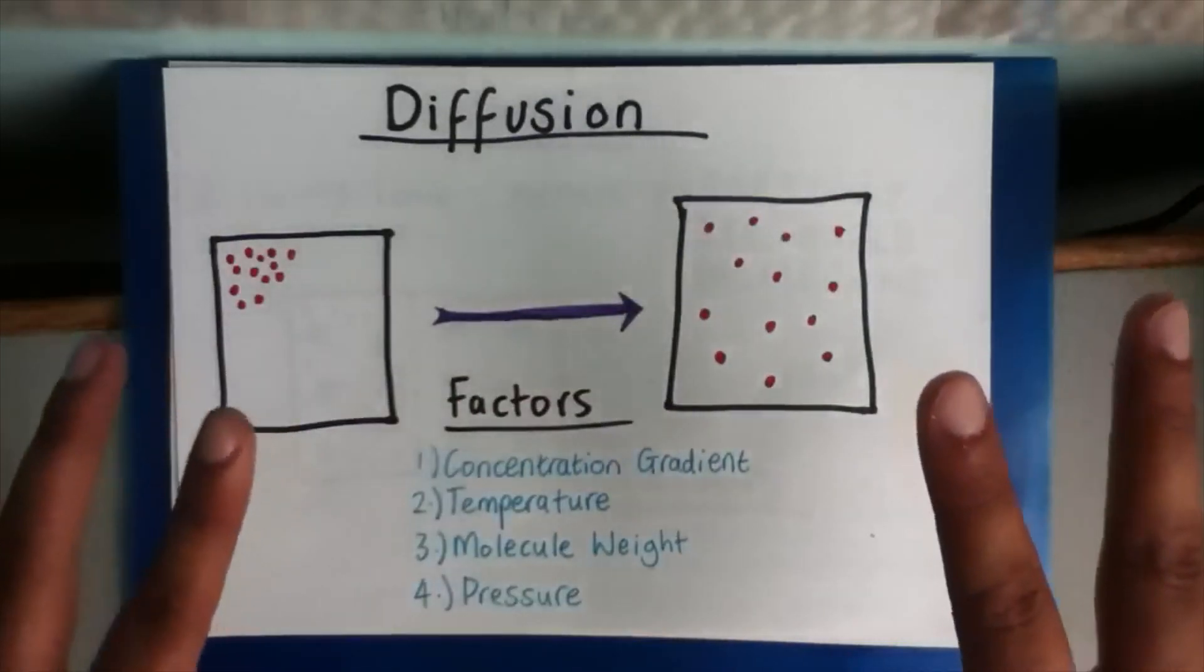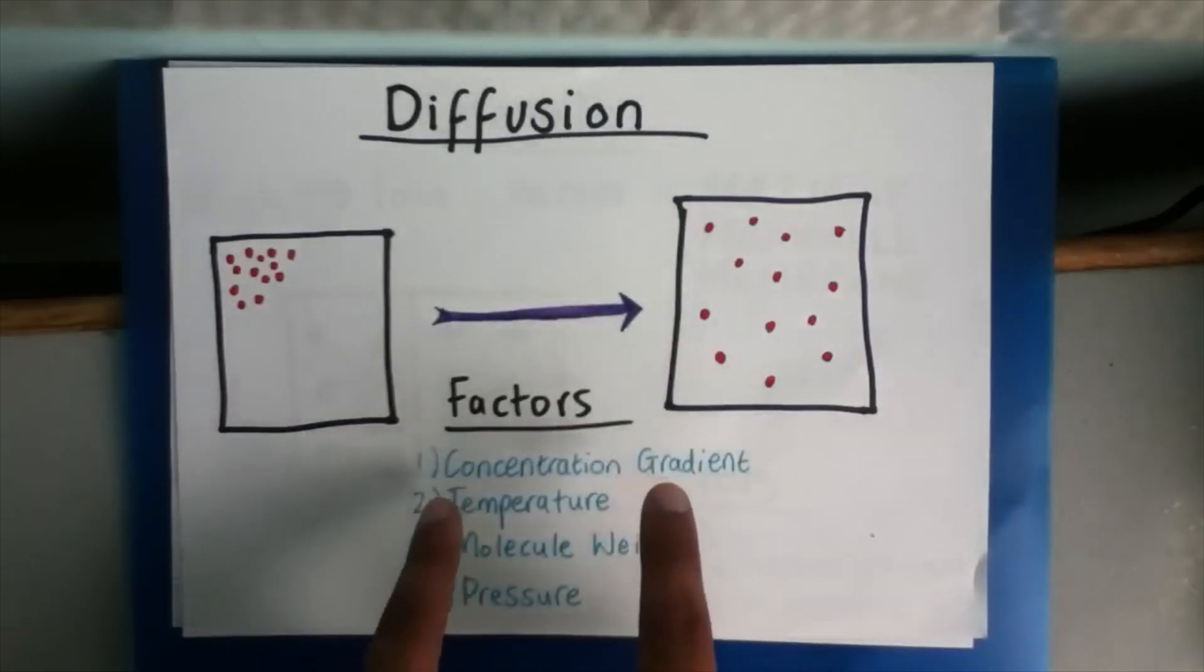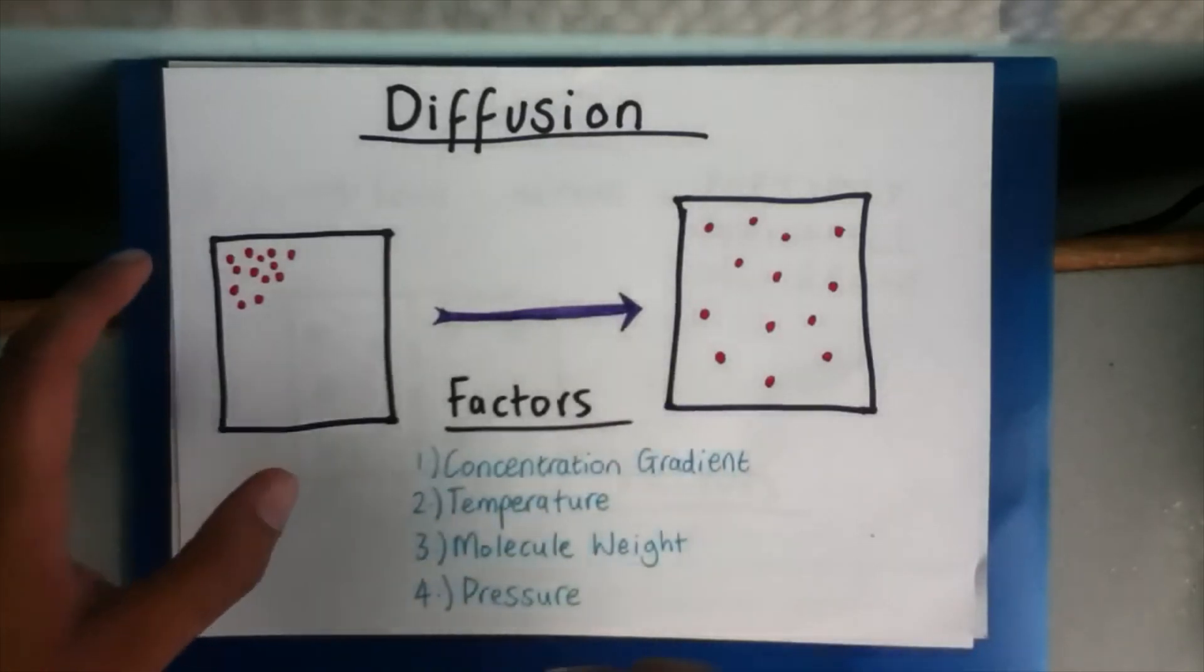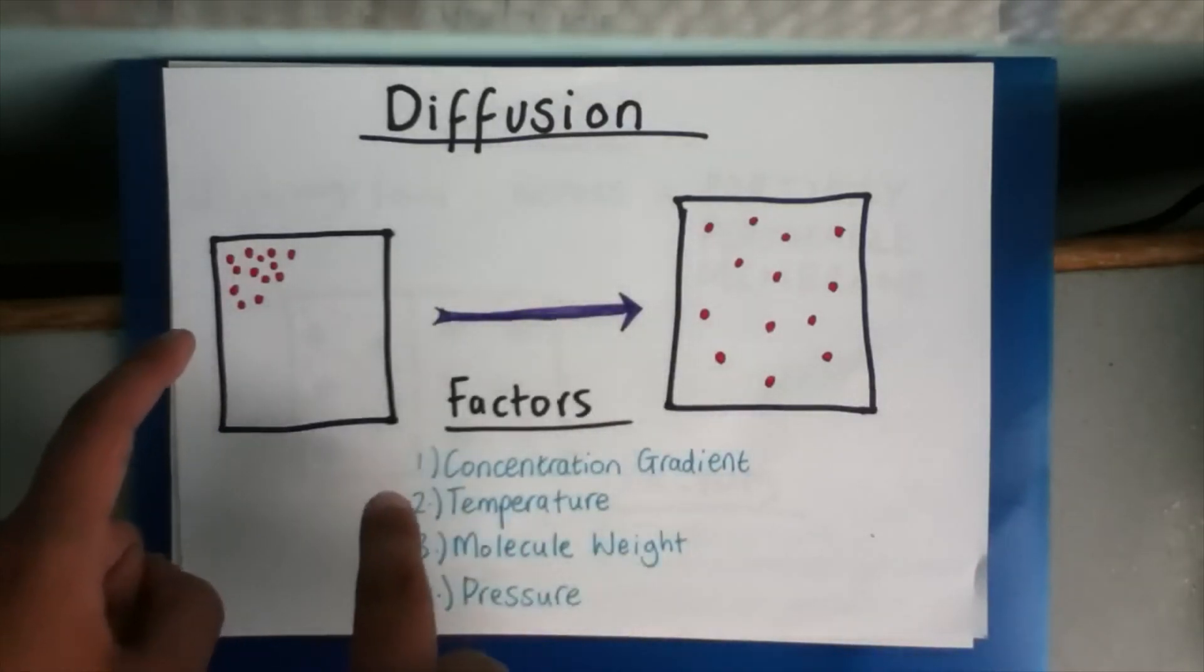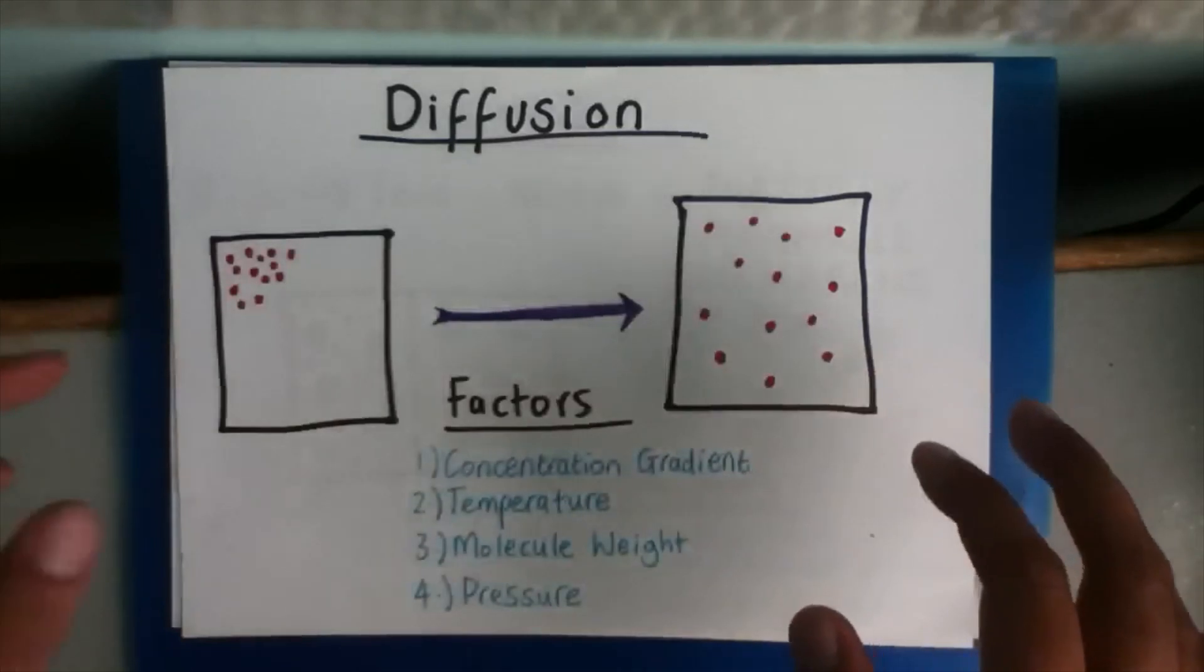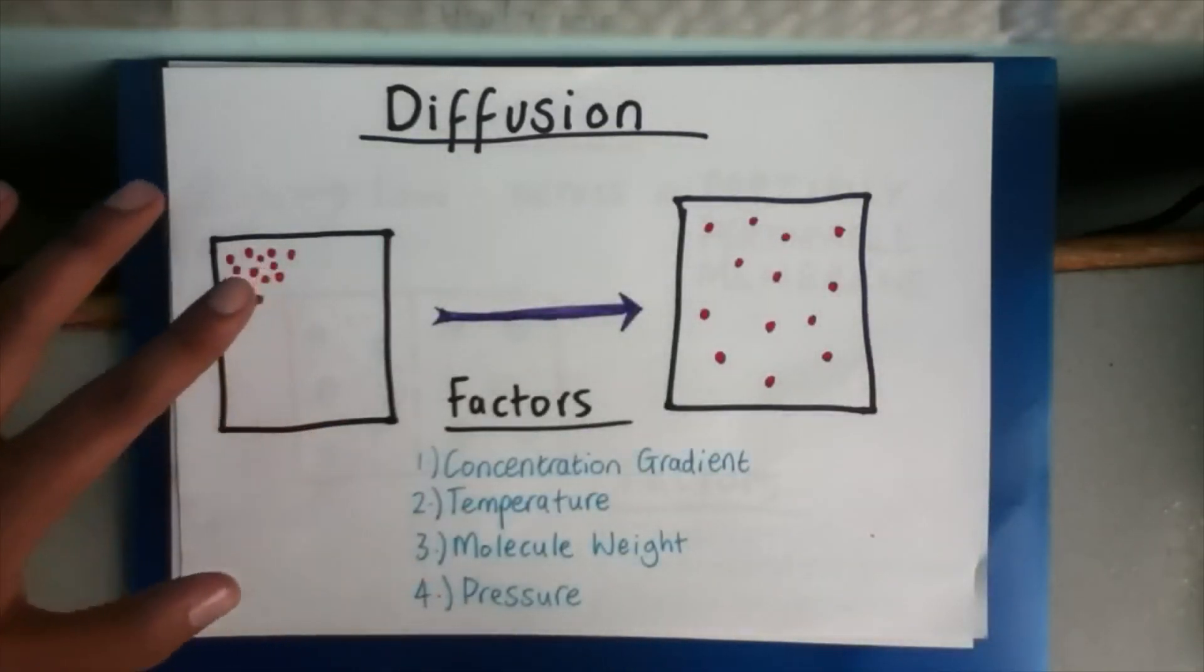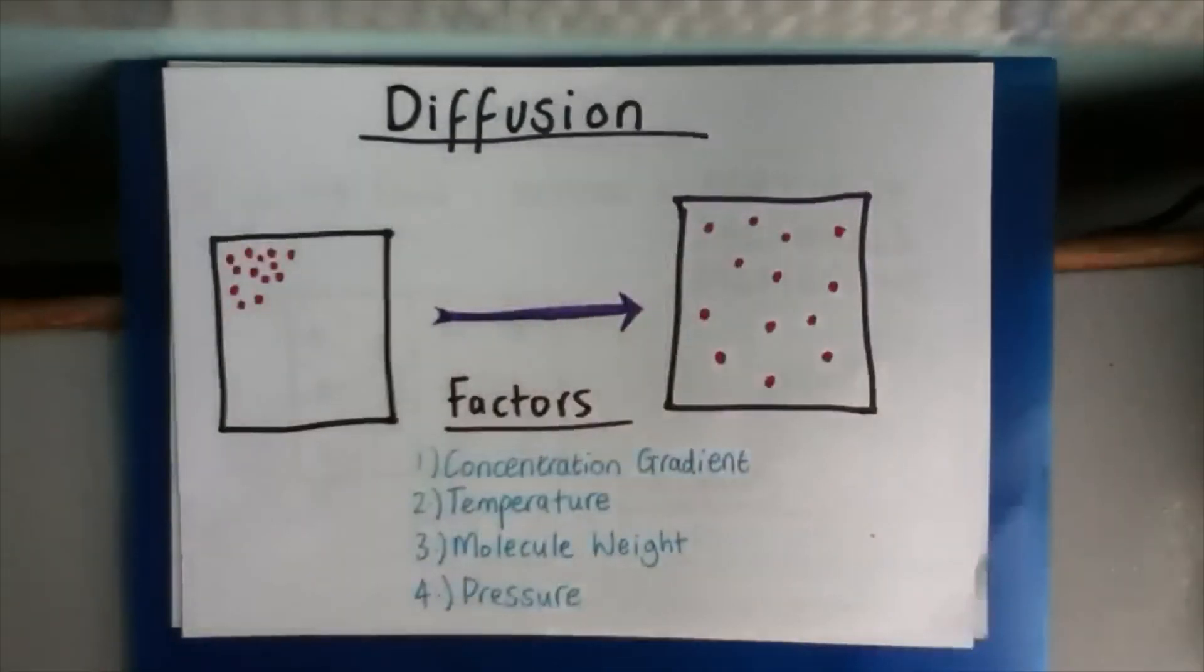Now, there are four factors which affect diffusion. The first one is concentration gradient. Now, what this means is if there is a higher concentration gradient, that means the difference between the molecules in the high concentration and the low concentration is much bigger. So, there are a lot of molecules here and less here. Because there are a lot more molecules here, they will bounce against each other and spread. So, diffusion will occur a lot faster.